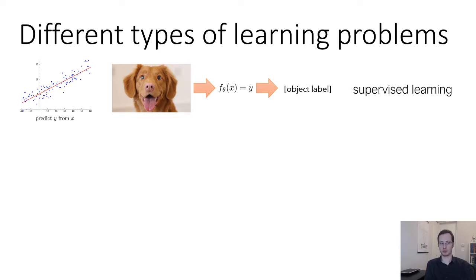These are all supervised learning problems. They're referred to as supervised learning because they are supervised with ground truth labels during training. But this is not the only kind of learning problem that exists.